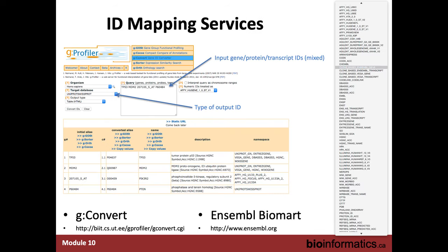There are public services or software tools that allow you to convert multiple kinds of identifiers. The g:Profiler server allows you to use literally hundreds of types of identifiers to map to other hundreds of types of identifiers, both in human and many other species. This handles the majority of different kinds of identifiers, allowing you to use a mix of identifiers as input and get an output of a specific kind of identifier. If there are multiple aliases, those would be revealed to you as well.